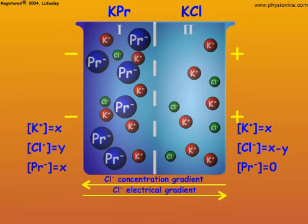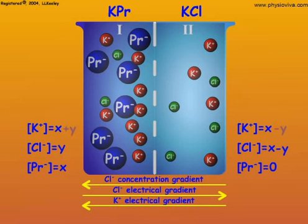At the same time, the negative charge on side 1 attracts the positive potassium ions to migrate from side 2 to side 1 along an electrical gradient.